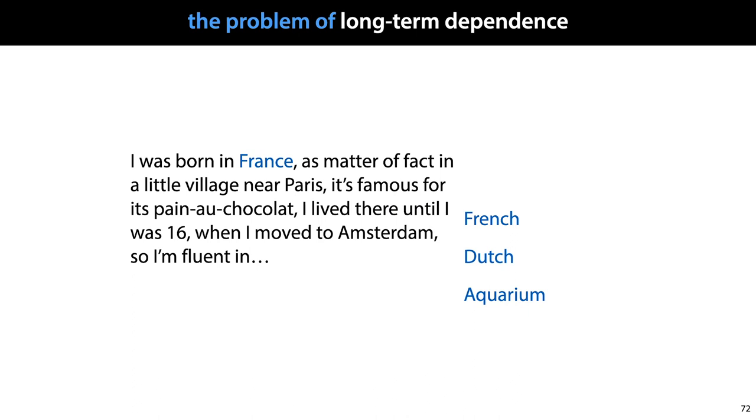Here's an example of where that might be necessary. If we have a sentence like this, I was born in France, as a matter of fact, in a little village near Paris. It's famous for its pain au chocolat. And I lived there until I was 16 when I moved to Amsterdam. So I'm fluent in. We need to remember the word France for a long time in order to note that French is a more likely completion than Dutch. Moreover, we need to ignore the word Amsterdam in the recent history, which implies that Dutch would be a more likely completion. One of the problems is that you cannot have a long term memory for everything. You need to be very selective. And in order to remember words from far back in the sequence, you need to forget a lot of the words that you see immediately if you judge them as unlikely to be relevant for your task. In order to remember things long term, you need to forget many other things.